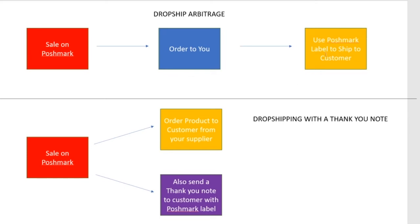That's how you drop ship onto Poshmark, but there's a key issue you need to understand: you need to use the Poshmark label to ship to the customer. There are two main ways to handle this — I've tried both and they both work well. You can do drop ship arbitrage, or you can drop ship like normal with a thank you note, because you need to ship the Poshmark label to the customer. They actually need to track the label from you to the customer in order to pay you out and give you credit for the sale.